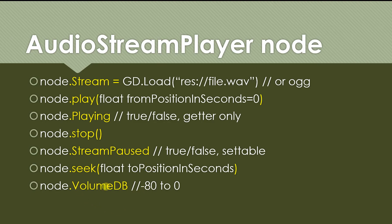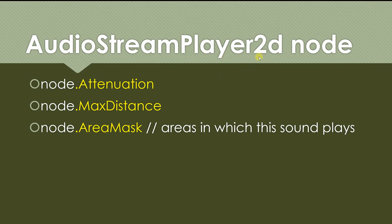The volume_dB property is a float controlling volume, ranging from negative 80 (lowest) to zero (highest). Audio Stream Player 2D additionally has attenuation, which determines how fast the sound dims as it moves further from the center of the screen. Max distance is the maximum distance from the center at which the sound can still be heard — beyond that it's silent. The area mask lets you restrict the sound to certain areas, which we'll cover in future tutorials.